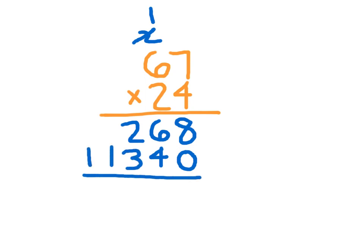Then we carefully add those two numbers together: 8, 0, 1. Then 1 plus 2 is 3, plus 3 is 6, and that 1. So 67 times 24 equals 1,608.